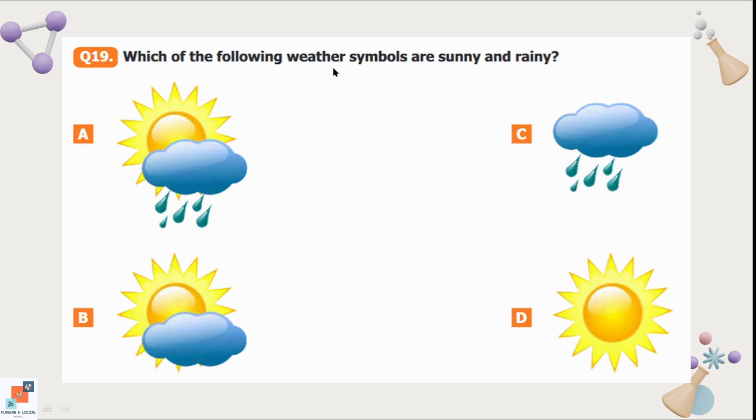Question number 19: Which of the following weather symbols are sunny and rainy? If we look at option A, it has a sun and rainy clouds. So that is our correct option. In option B, we can see a sun and a cloud, not a rainy cloud. That is not the correct one. In option C, we can see a rainy cloud. And in option D, we can see a sun only. So option A is the correct one which has both sun and rain.